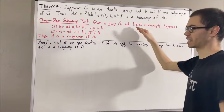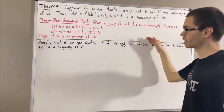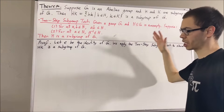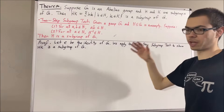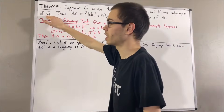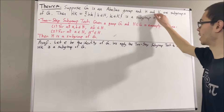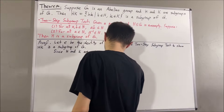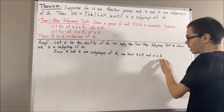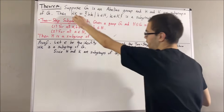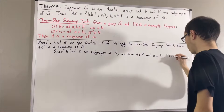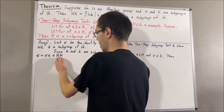First, we need to verify that hk is a non-empty subset of g. Of course, hk is a subset of g, but how come hk is non-empty? Well, to show that hk is non-empty, we can show that the identity element belongs to hk. Since h and k are subgroups of g, we know that the identity belongs to both h and k. So, since e is an element of h and e is an element of k, e times e fits the form to be an element of hk. And e times e is equal to e, so e is an element of hk. This shows that hk is non-empty.